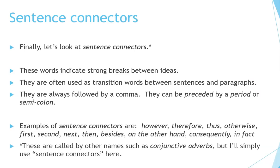Finally, let's look at sentence connectors. These words indicate strong breaks between ideas and are often used as transition words between sentences and paragraphs. They are always followed by a comma and can be preceded by a period or a semicolon. Examples include: however, therefore, thus, otherwise, first, second, next, then, besides, on the other hand, consequently, in fact, and so on. These are also called conjunctive adverbs.